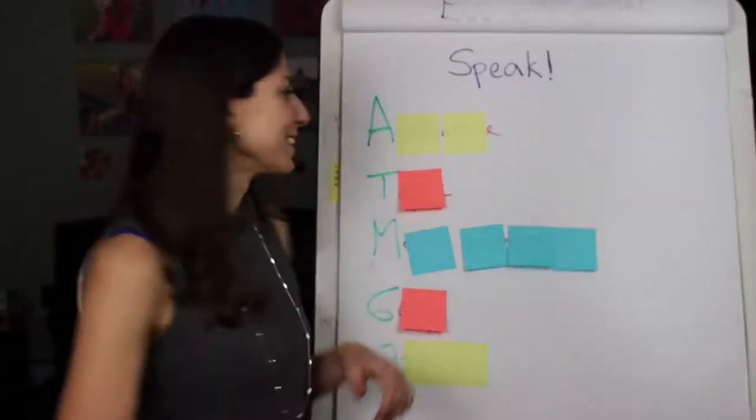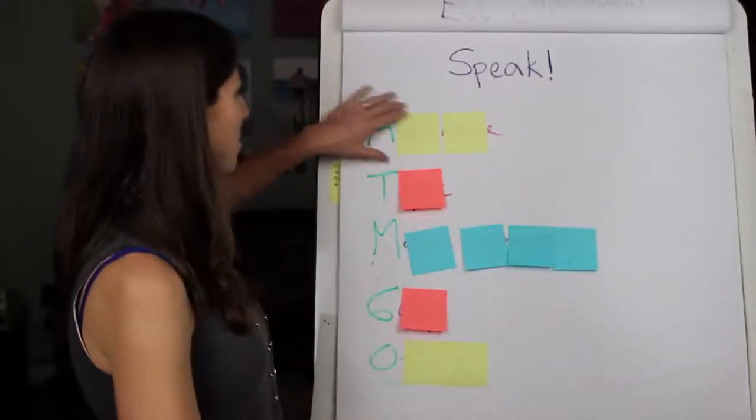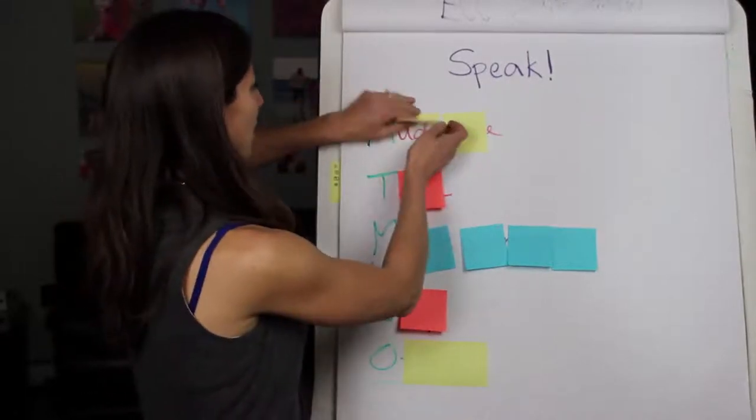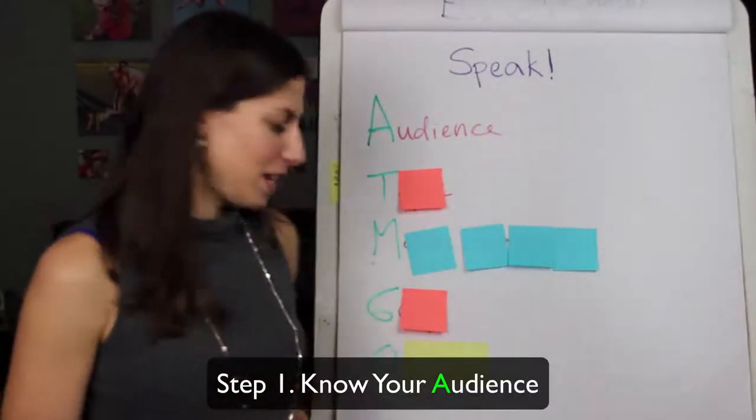Okay. ATM Go. So the first step is that you need to know who your audience is.